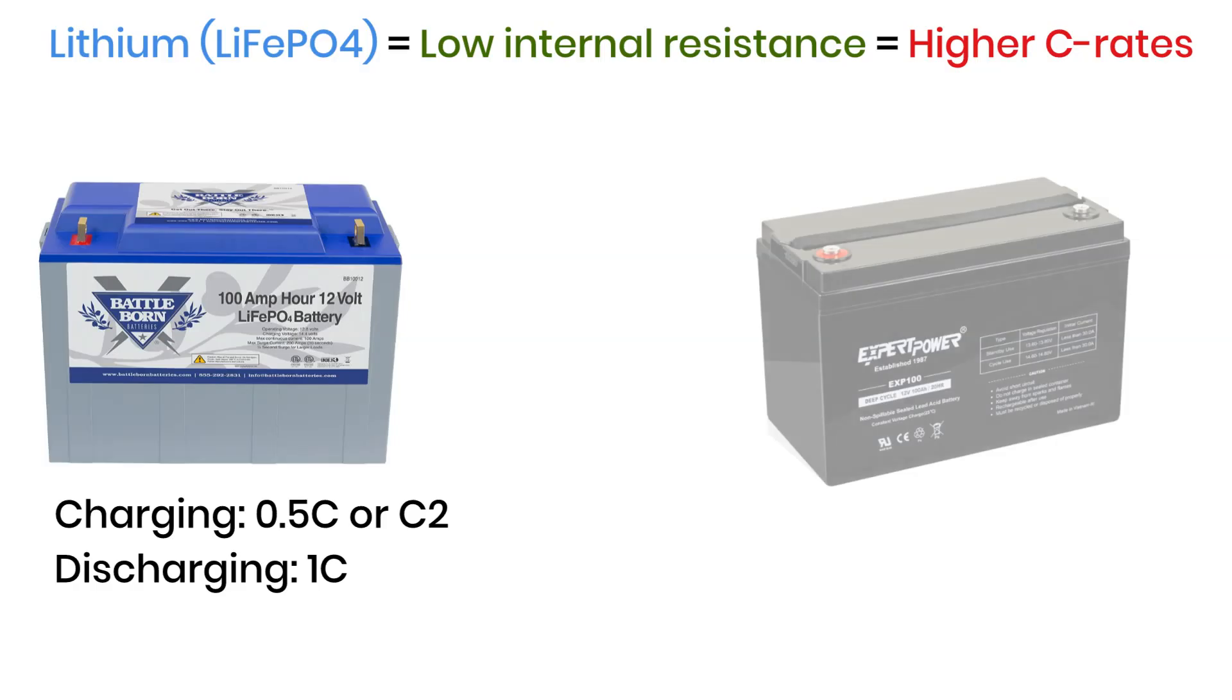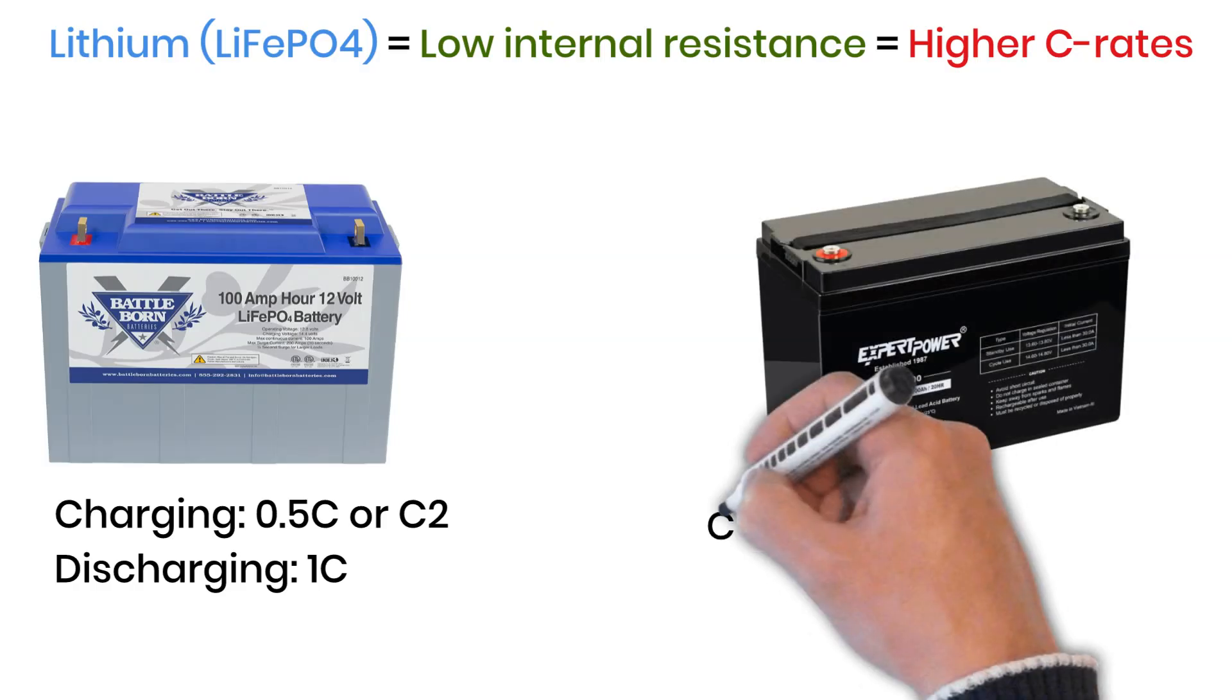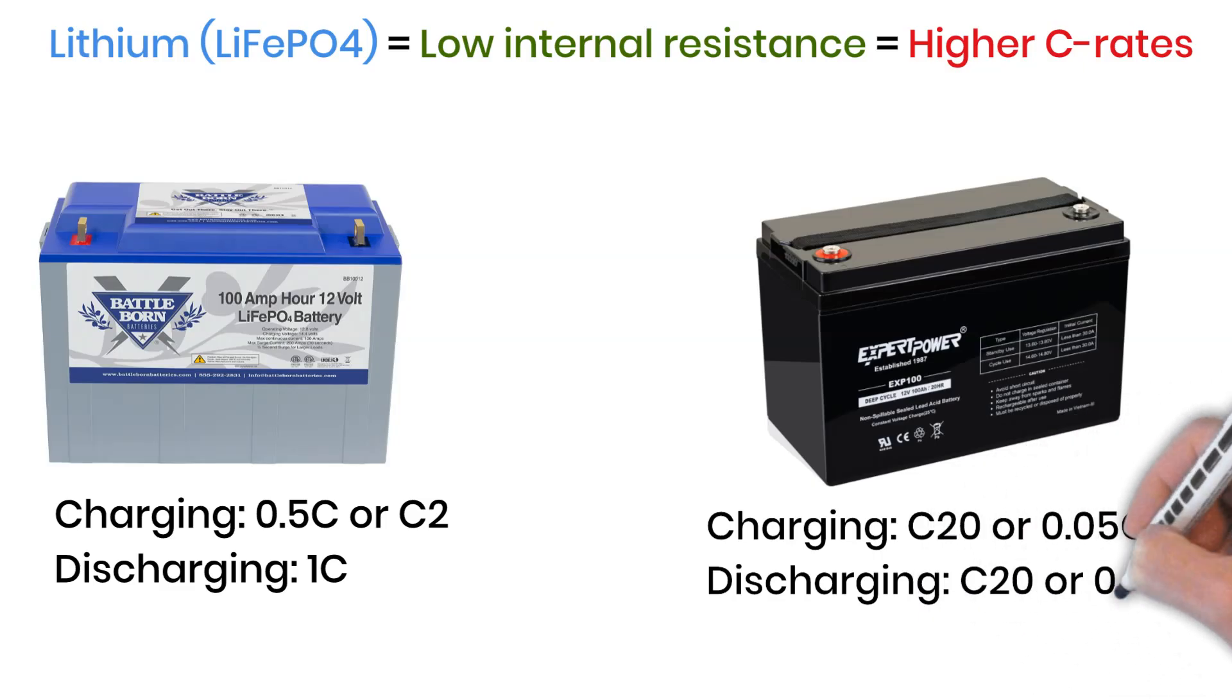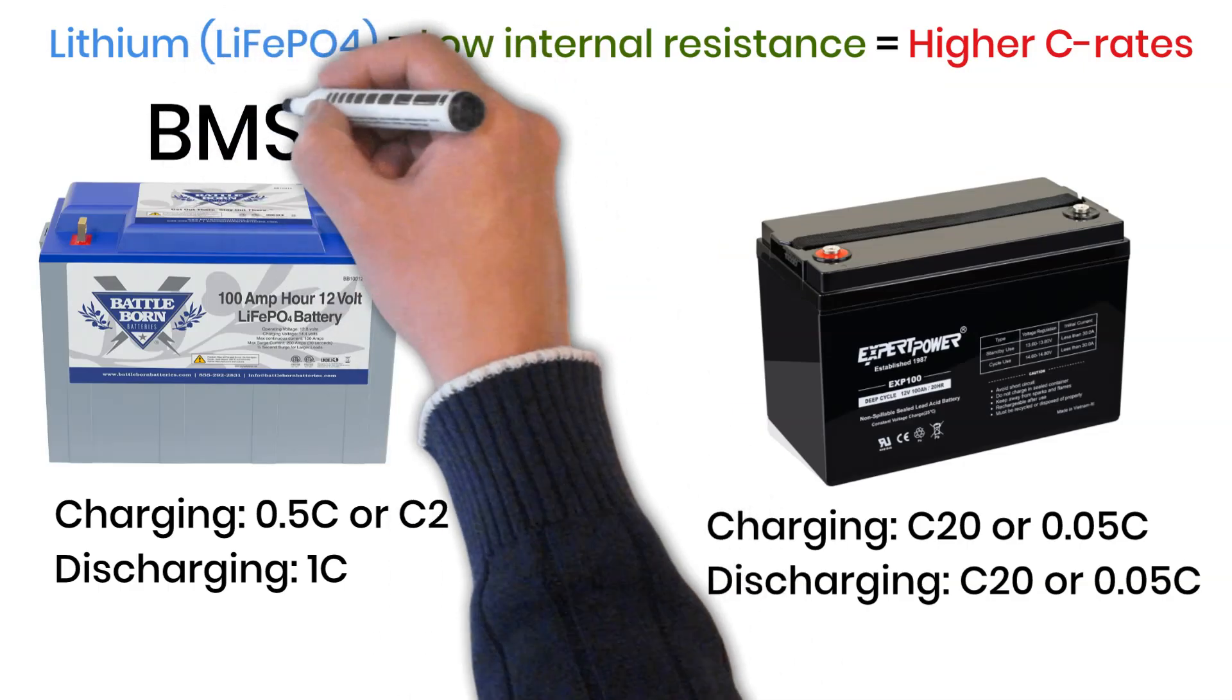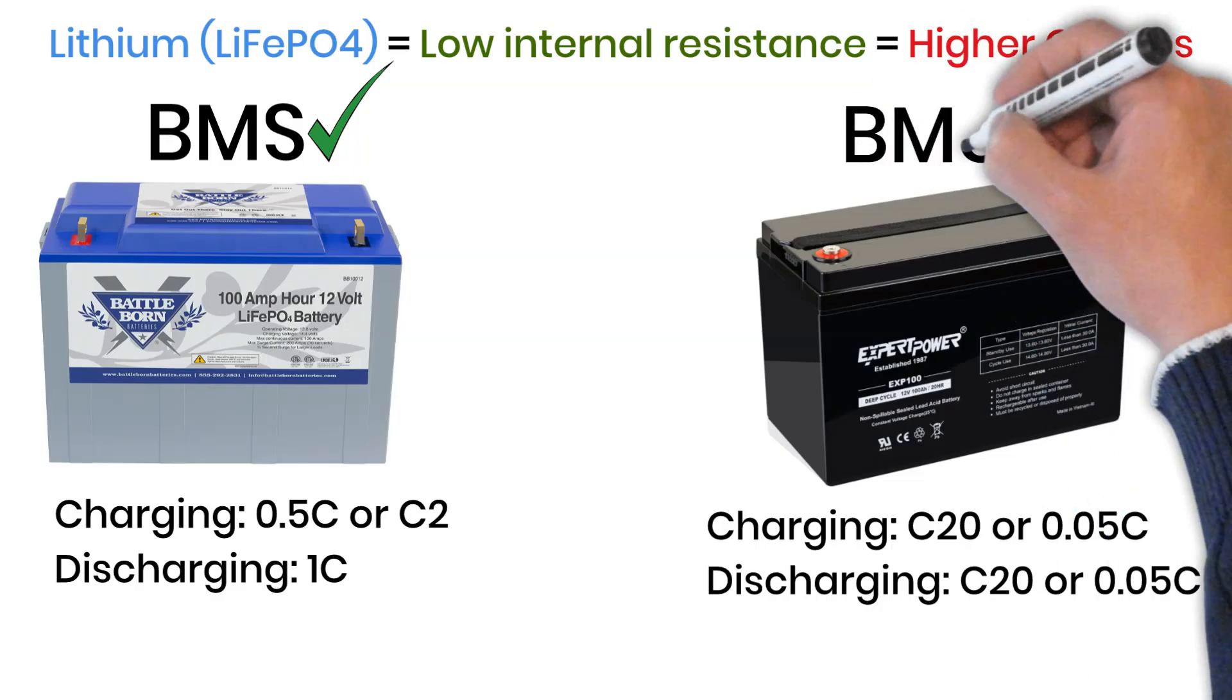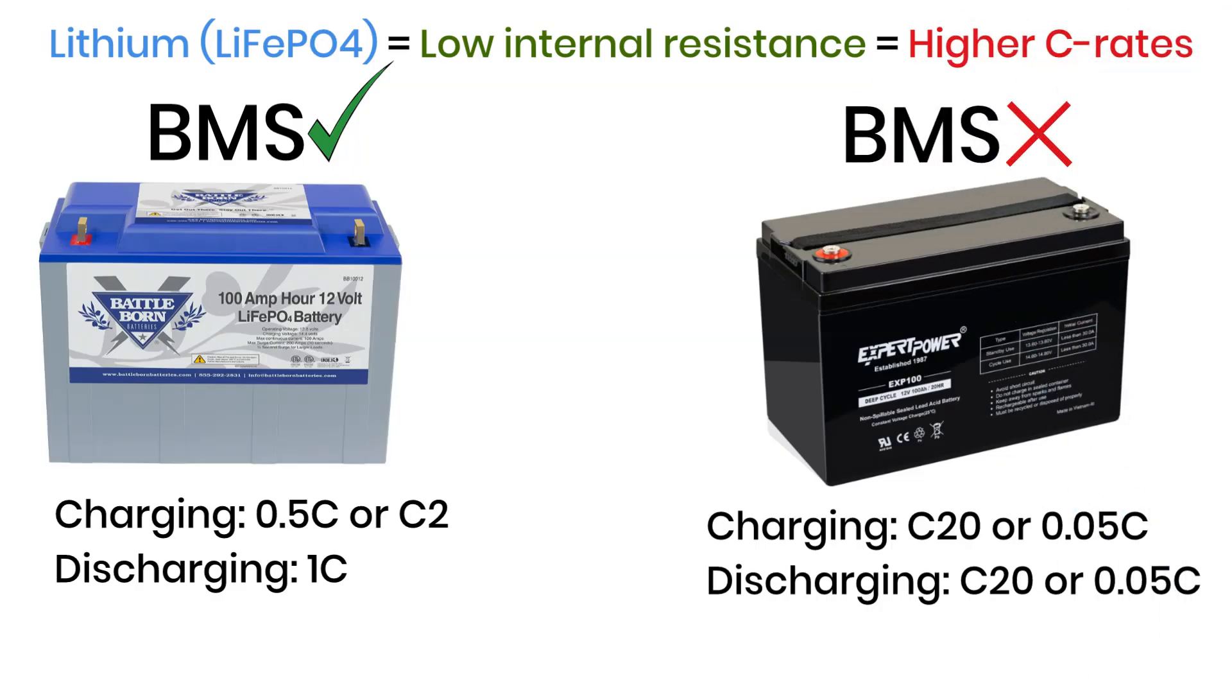Lead-acid batteries, on the other hand, usually come with something like C20, which means they can only be charged or discharged slowly. Lithium batteries also include a built-in battery management system, or BMS. The BMS automatically shuts the battery down if the current gets too high. Lead-acid batteries do not have this kind of protection, so you have to calculate the load correctly before buying or using them.